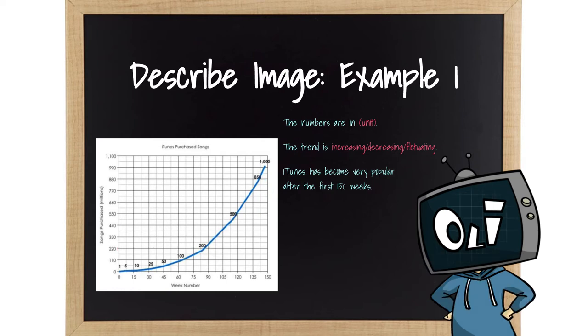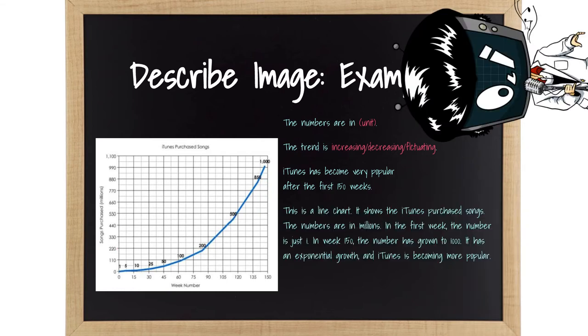Here comes the minimalistic version. This is a line chart. It shows the iTunes purchased songs. The numbers are in millions. In the first week, the number is just one. In week 150, the number has grown to a thousand. It has an exponential growth, and iTunes is becoming more popular.